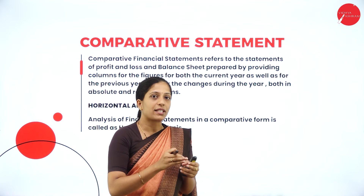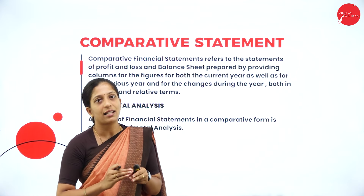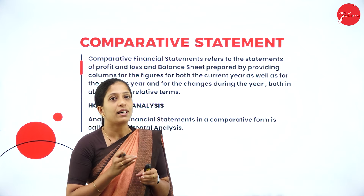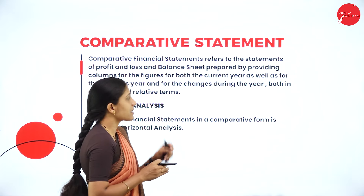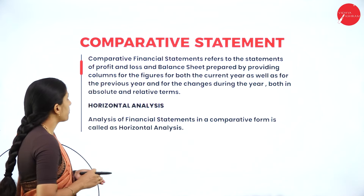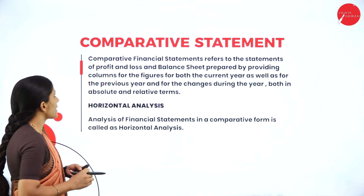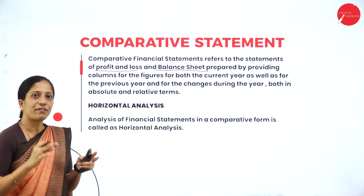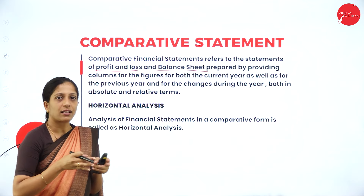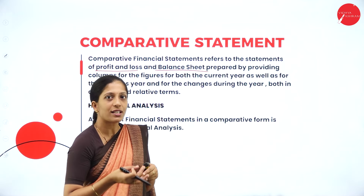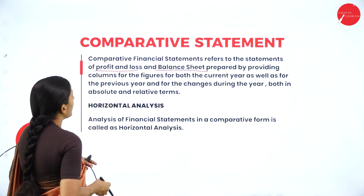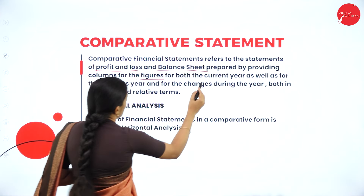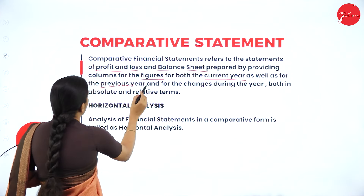Under financial statement analysis, we have two types: horizontal analysis and vertical analysis. Under horizontal analysis, you are going to learn about comparative statement. Comparative financial statement refers to the statement of profit and loss as well as balance sheet — that is, your profit and loss statement and balance sheet prepared by providing columns for figures for both the current year as well as for the previous year.